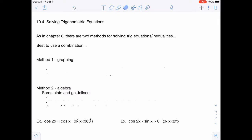As in chapter 8, there are two methods for solving these equations and inequalities, and it is often best to use a combination. When you are graphing, feel free to use a calculator to graph both equations. If it's set up with one function on one side and the other on the other side, then you just set each one of those equal to y in your graphing calculator. And then you'll want to use the zoom and trace functions to find where they cross or intersect.